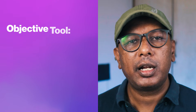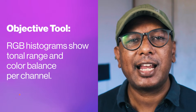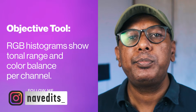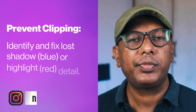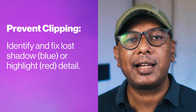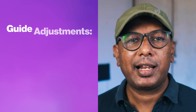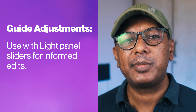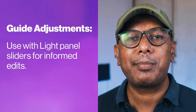To recap, the RGB histograms in Lightroom Mobile are your objective tools for understanding your photo's tonal range and color balance, channel by channel. They help you spot and prevent clipped shadows and blown-out highlights in any red, green, or blue channel, preserving maximum detail. Use them dynamically with the light panel sliders for informed exposure and contrast adjustments, and be mindful of how they signal color balance issues.